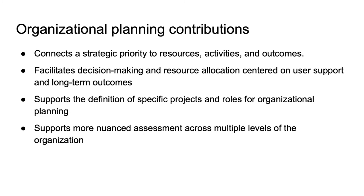Organizations often identify changes to their internal structure and operations after creating a strategic plan, posing potential barriers to action. This can happen because the strengths and needs of an organization do not always surface in strategic planning activities. In the context of UC San Diego, the library had undertaken a significant restructuring approximately five years before this most recent planning process. We needed to assess the impact of these changes to ensure that the library had adapted to previous restructuring and that it was responsive to emerging needs. This internal assessment helped us ask important questions about our capacity to meet strategic priorities, and the logic model proved a useful lens to explore potential changes. For example, the logic model diagrams a path from strategic priorities to resources, activities, and outcomes, making this connection supports decision making and resource allocation centered on user needs and long-term objectives.